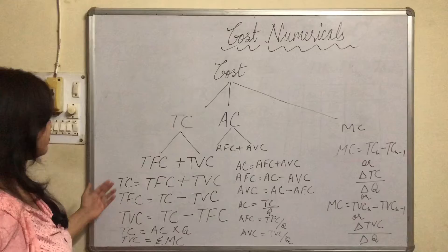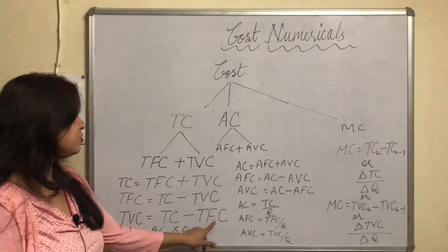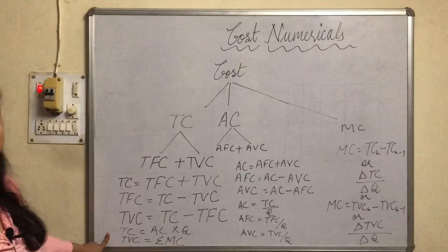we just have to take the difference from the total cost. Like total fixed cost equals total cost minus total variable cost, and if we want to find total variable cost then total cost minus total fixed cost.